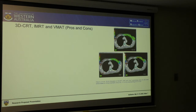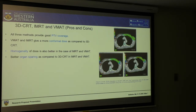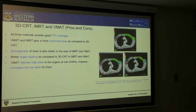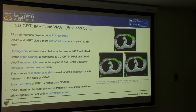Based on the research done so far, all three techniques provide good PTV coverage. VMAT and IMRT give a more conformal dose, and homogeneity is better in IMRT and VMAT, which improves cosmetic outcomes. Organ sparing is better in IMRT and VMAT compared to 3D CRT because the dose is more conformal, resulting in less radiation to organs at risk. VMAT reduces high dose to organs at risk but unfortunately increases the low dose to them. The number of monitor units and treatment time is minimum with VMAT, highest in IMRT, and intermediate in 3D CRT — which is particularly important in breast cancer because reduced treatment time reduces intrafraction motion of the breast.